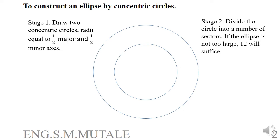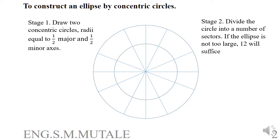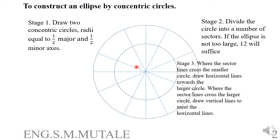Step two: divide the circles into a number of equal sectors. If the ellipse is not too large, 12 sectors will suffice. Divide the circle into 12 equal parts, giving you 12 demarcations. To verify, each angle between divisions should be 30 degrees.